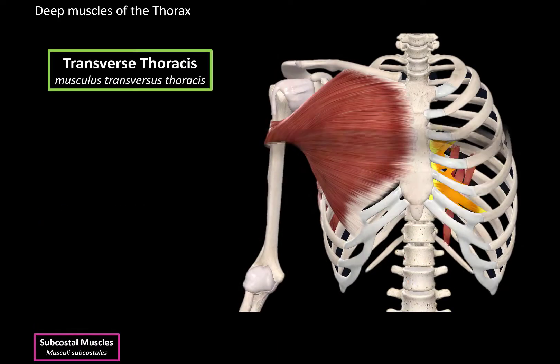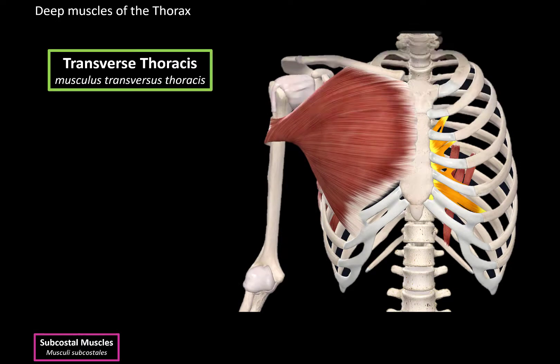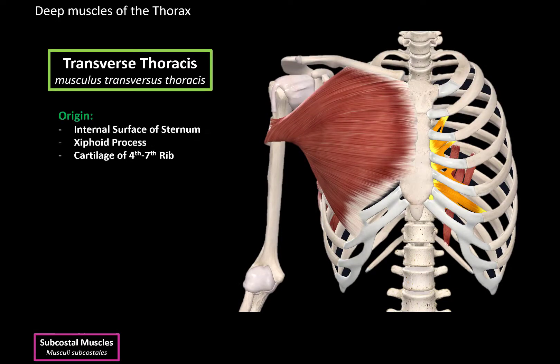Then we have the transverse thoracic muscle, located here. It originates from the internal surface of the sternum, the xiphoid process, and the cartilage of the fourth to the seventh rib. They insert at the cartilage of the second to the sixth rib. They also pull the chest downwards to aid with expiration.